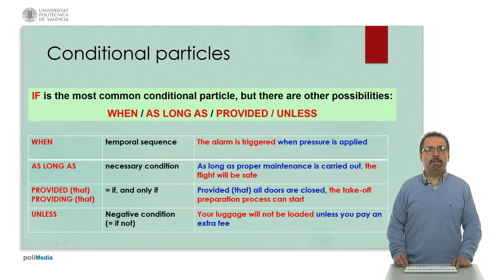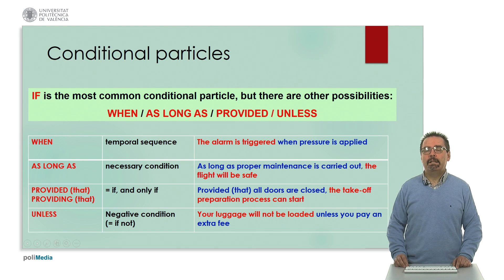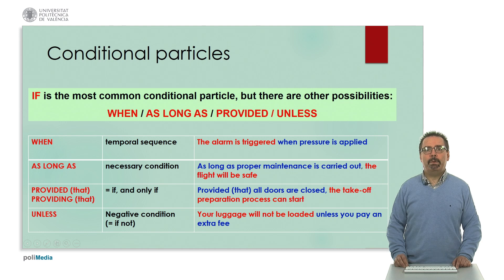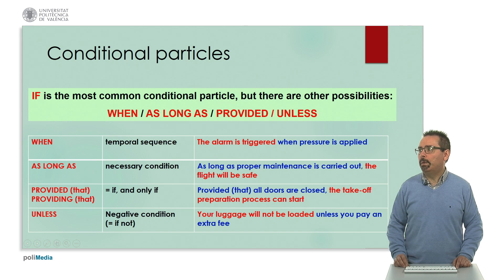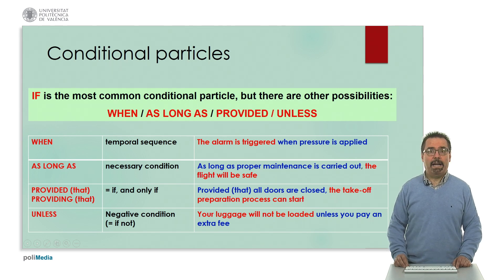'If', as we said, is the most common conditional particle, but there are also other possibilities: 'when', 'as long as', 'provided', and 'unless'. 'When' is normally associated with a temporal sequence because it is actually a time connector, as in the example: 'The alarm is triggered when pressure is applied.' In this case, 'when' is almost equivalent to 'if'.